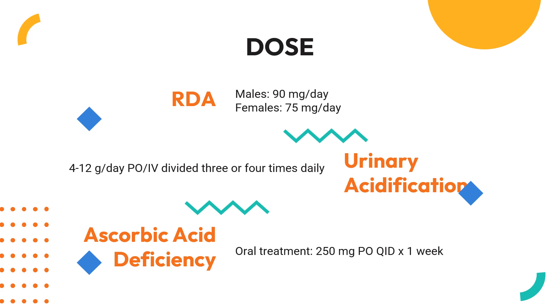Ascorbic acid deficiency and scurvy — Oral prevention: see recommended daily intake. Oral treatment: 250 mg, PO QID for one week.